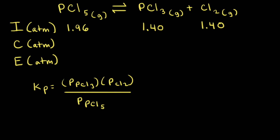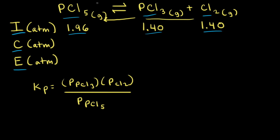Let's use an ICE table to find the final total pressure P3. In the ICE table, I stands for initial partial pressure, C for change, and E for equilibrium partial pressure. After the volume was reduced to one liter, the initial partial pressure of PCl₅ is 1.96 atm, and the partial pressures of PCl₃ and Cl₂ are both 1.40 atm. Since the net reaction goes left, PCl₅ increases, so we write +X under the change column for PCl₅.